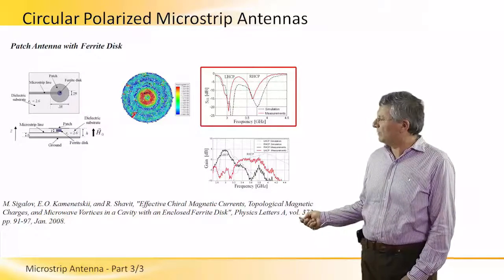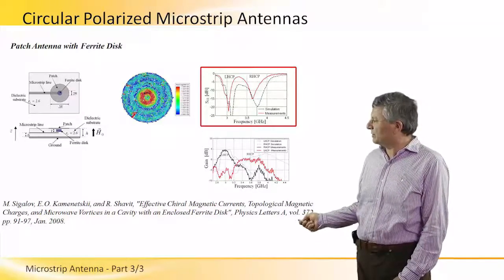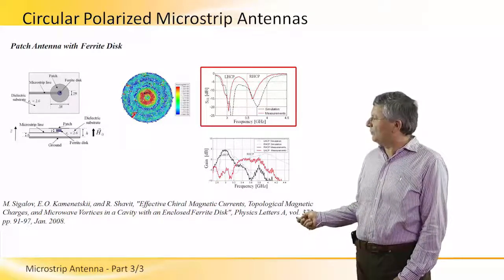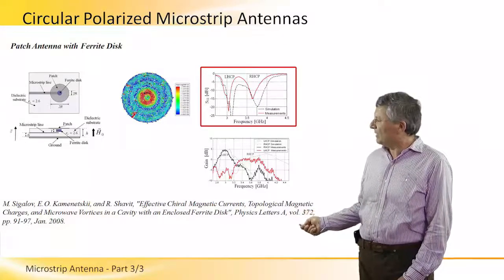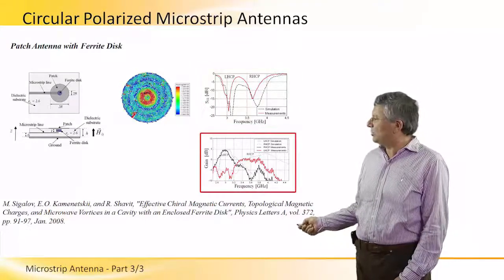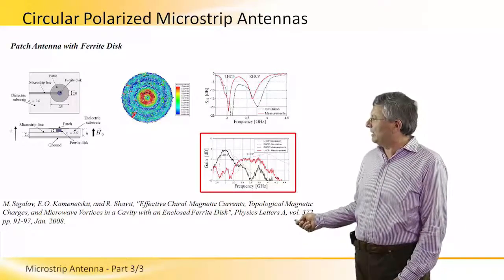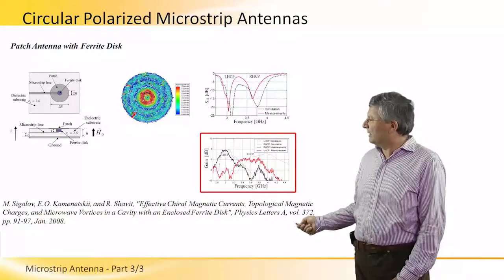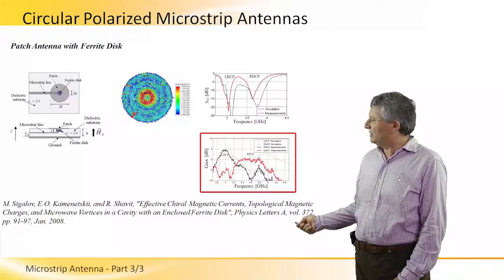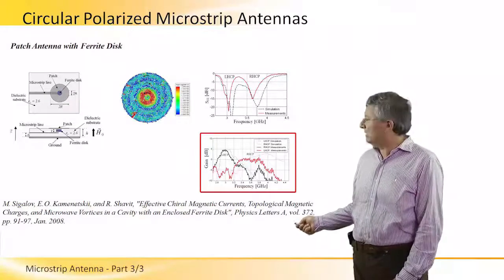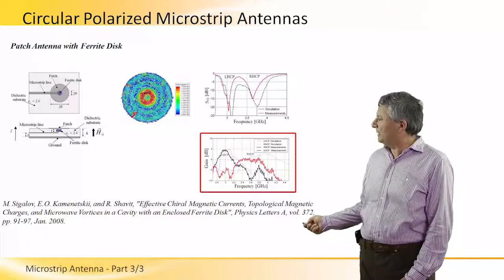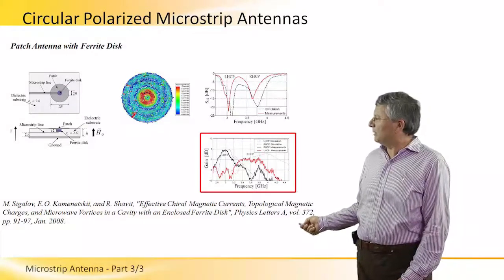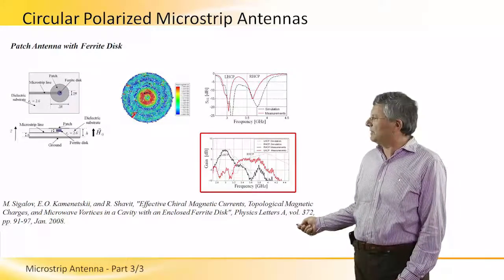We can see this in the reflection coefficient plot versus frequency: at two frequencies we obtain left-hand circular polarization and right-hand circular polarization. In the gain plot, at the low frequency you obtain the left-hand circular polarization maximum gain, and for the higher frequency you obtain the right-hand circular polarization maximum radiation.